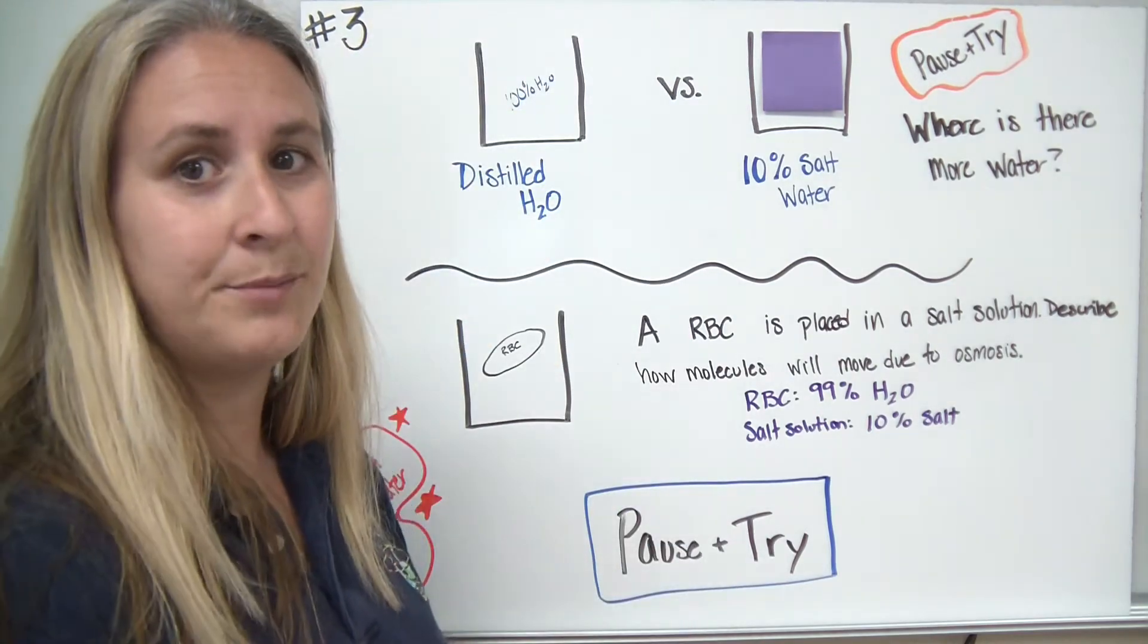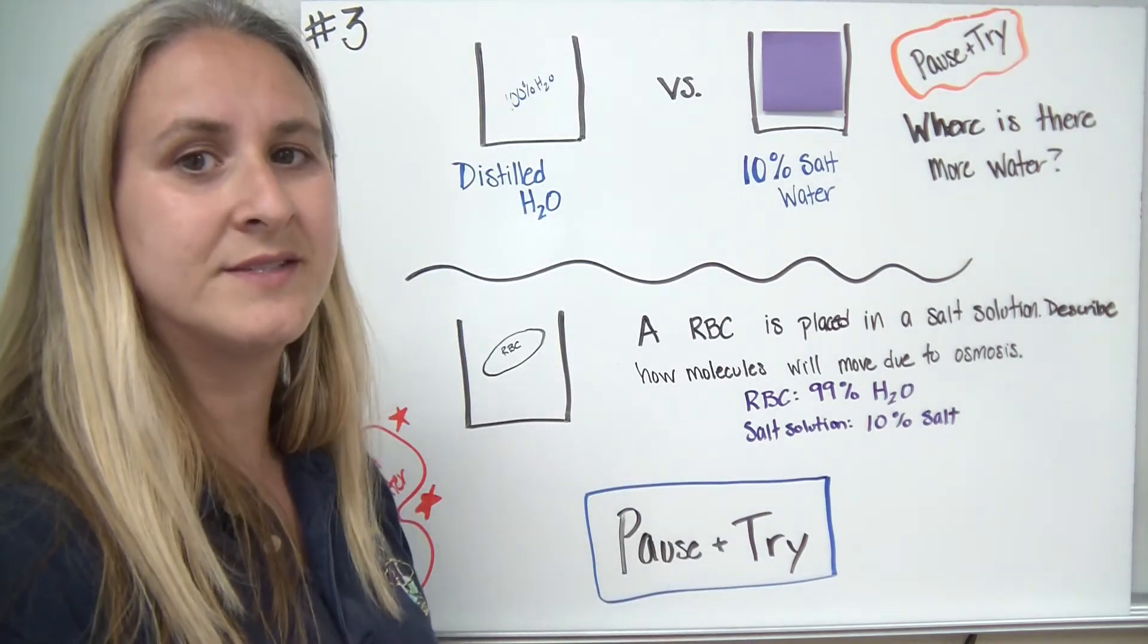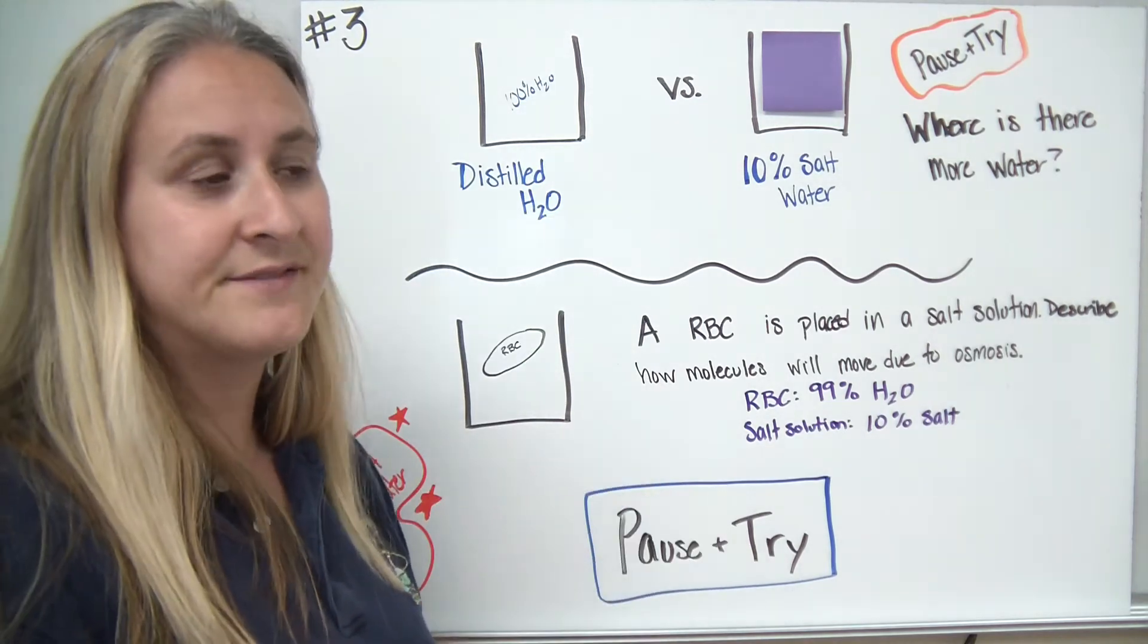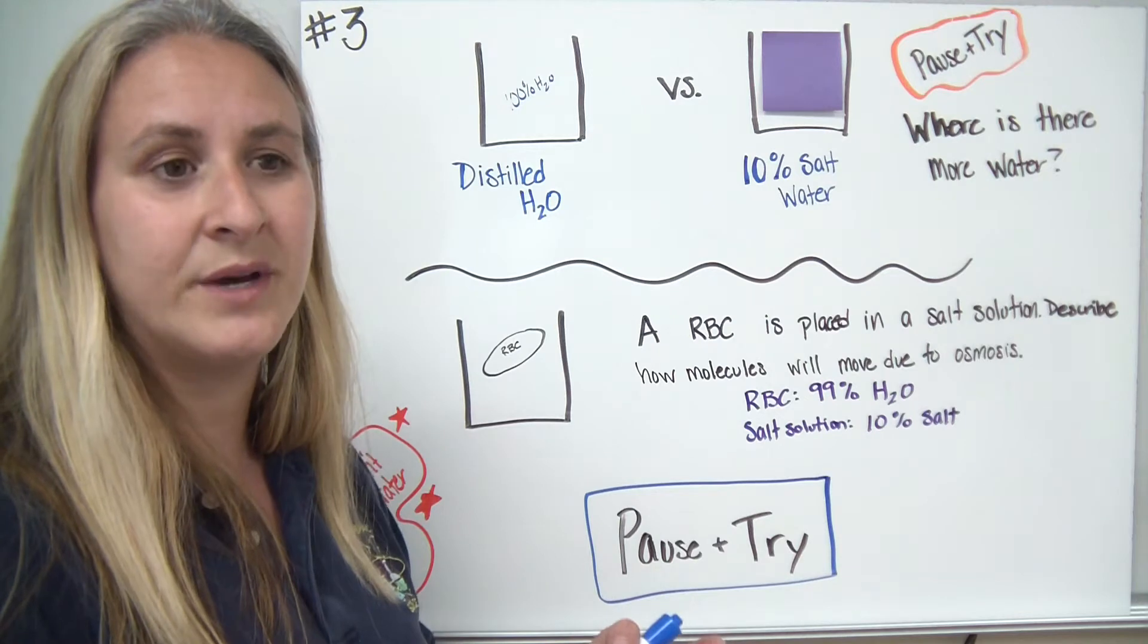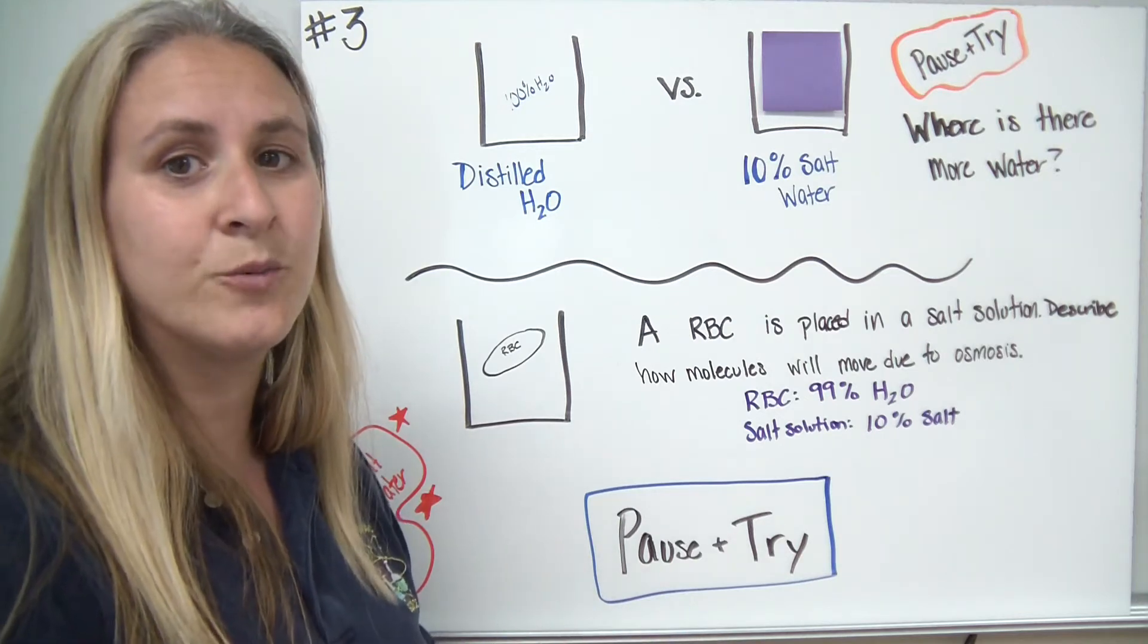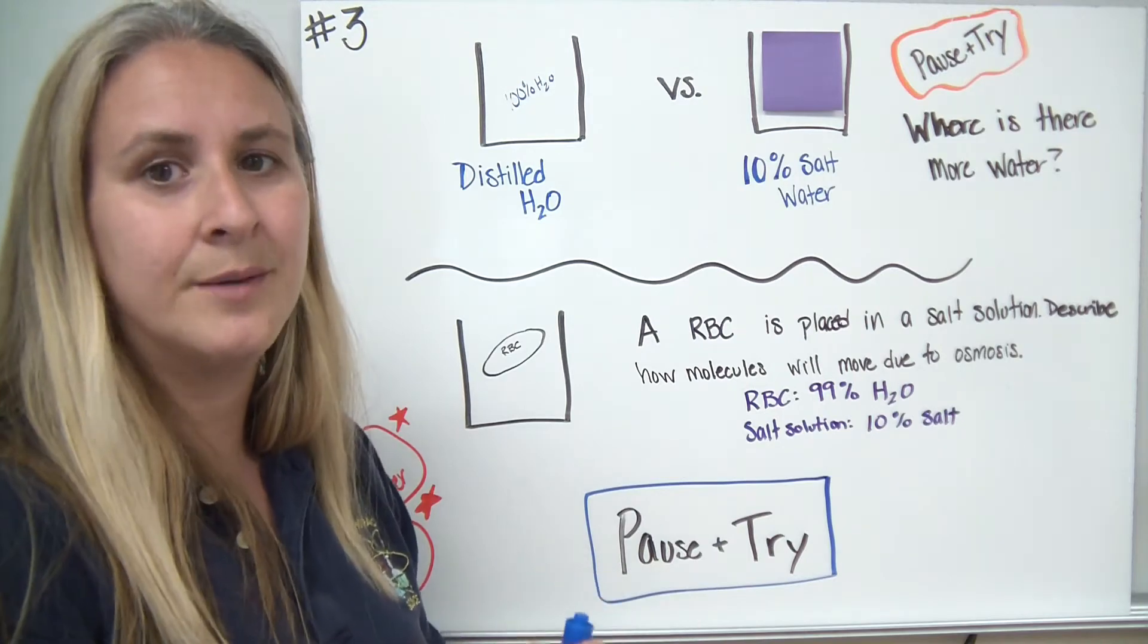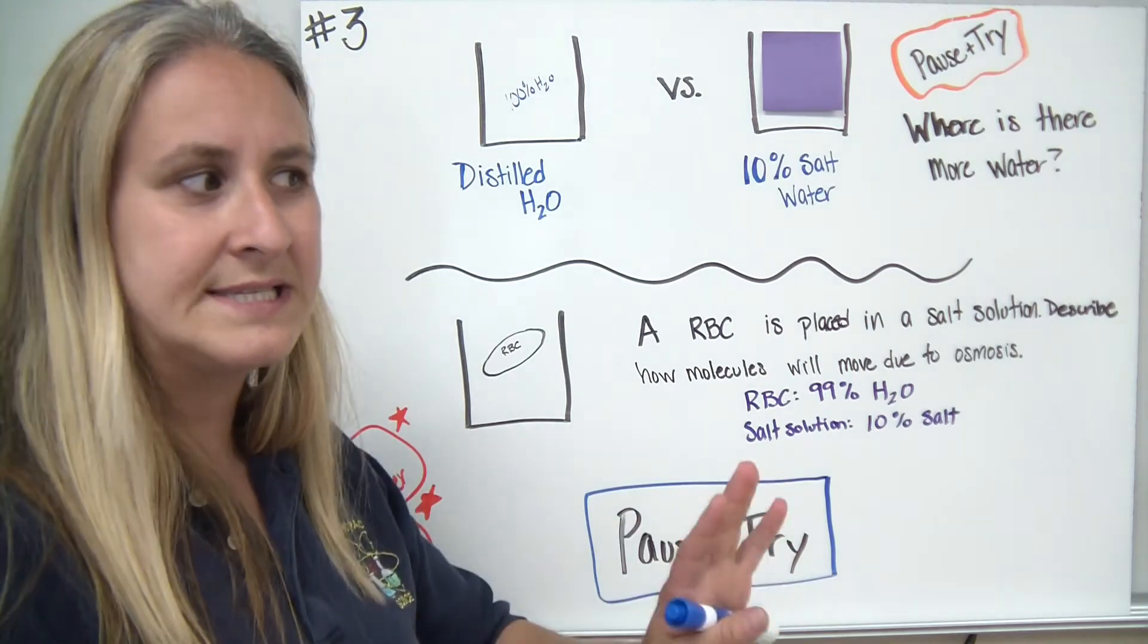Distilled water, if we call it pure water, means nothing else is in there. So it's 100% water. In the case of somebody using distilled water in their iron, one of the reasons why they use it is because there weren't any salts or anything else dissolved in it that could maybe clog up the iron if they were using the steam feature.